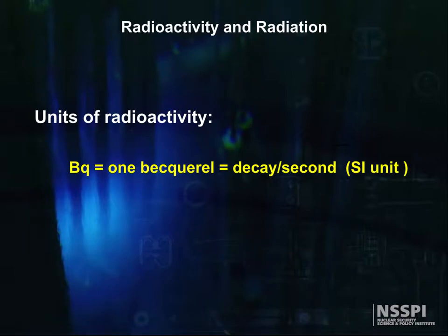Another widely used unit is the Curie, equal to 3.7 times 10 to the 10th becquerels. The abbreviation for a Curie is CI.